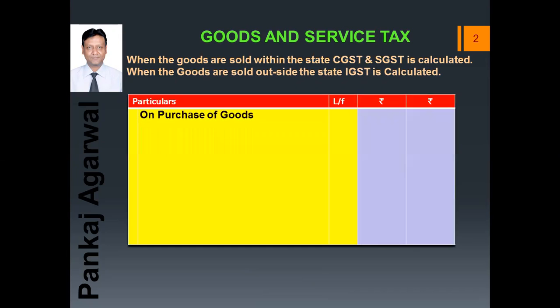Let's see how it is to be calculated on purchase of goods. The journal entry will be: Purchases Account debit, Input CGST Account debit, Input SGST Account debit, Input IGST Account debit, to Cash or Bank Account or to Creditors. I use the word 'input' because when the goods are purchased they are coming into your factory. When the goods are coming to us in our factory, the word 'input' should be used. When we are selling the goods and the goods are going out of the factory, we will use the word 'output'.